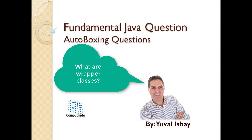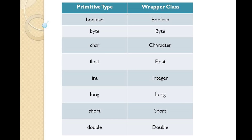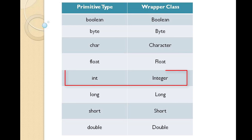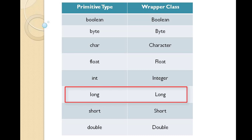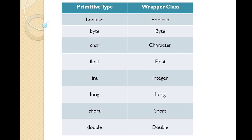Wrapper classes are the corresponding object representation of primitive types. The following table lists the primitive types and their corresponding wrapper classes. We can see that for each primitive type, Java provides a corresponding object — for example, boolean, byte, integer, and long.